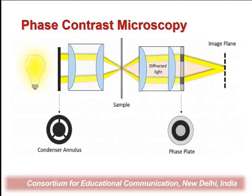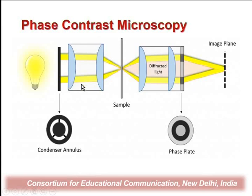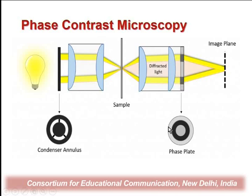Let us begin our discussion with the diagram of a phase contrast microscope. In a schematic diagram, the phase contrast microscope contains two components apart from all the usual components already discussed for a light microscope. These two components are the condenser annulus and phase plate. The condenser annulus along with the condenser lens maintains or creates a phase light which is incident on the sample, and because of the thickness of the sample, there is a very slight change in the phase of the light as compared to the incident light.